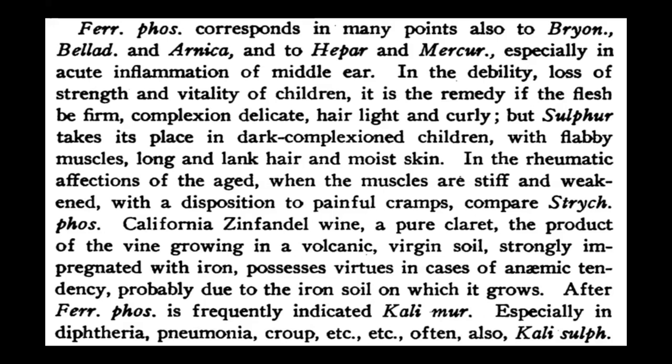After Ferrum phos, Kali mur is frequently indicated — especially in diphtheria, pneumonia, and croup — where a discharge is generally present along with the pain. If the discharge is not suppurative, think of Ferrum phos with Kali mur. If it is suppurative, you can go with Kali sulph as well. This is how you apply your logic to learn all those remedies, and the relationship of each remedy with other homeopathic remedies must be thoroughly understood.